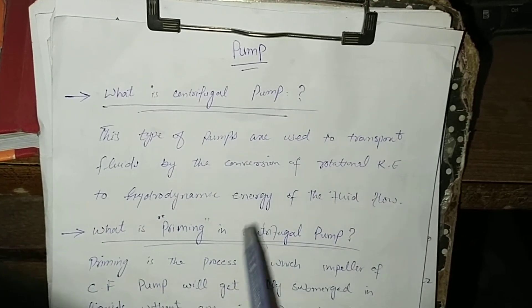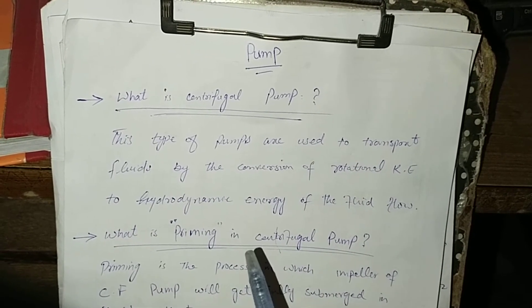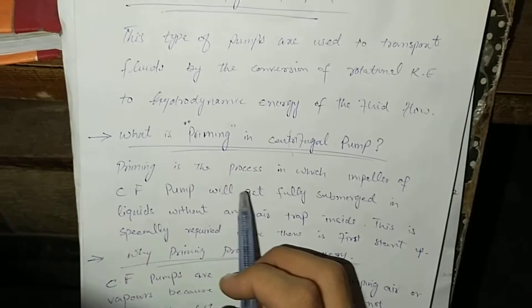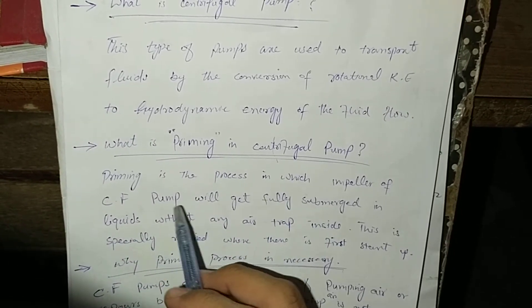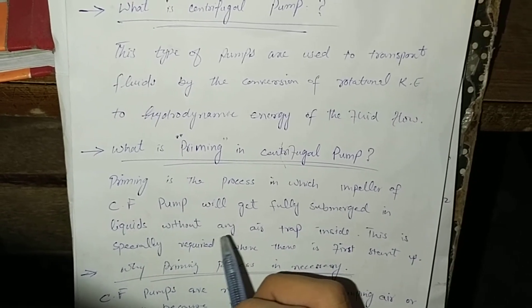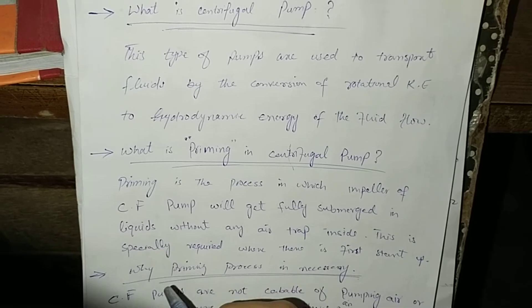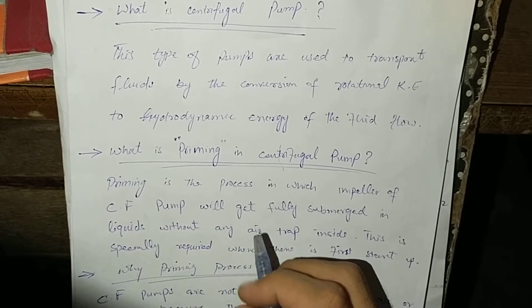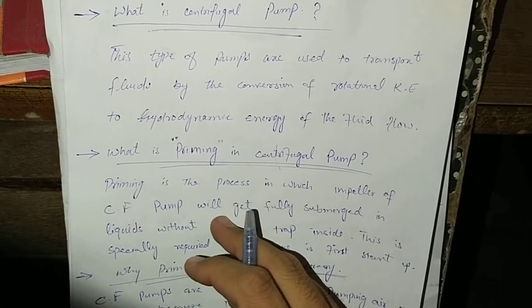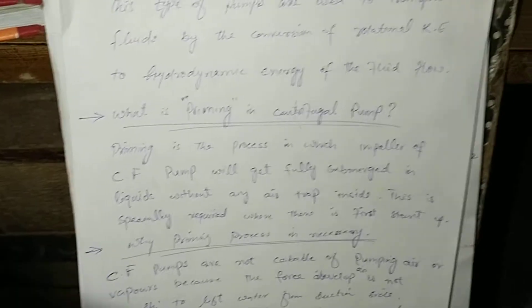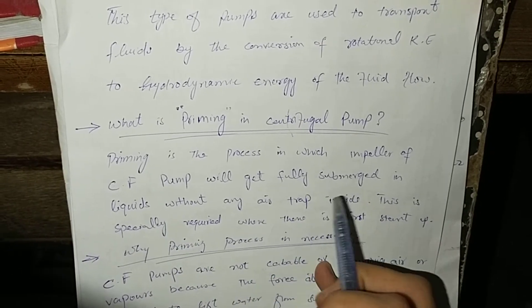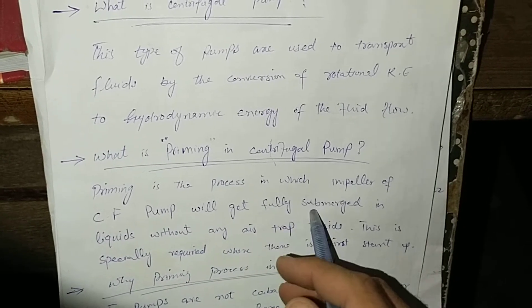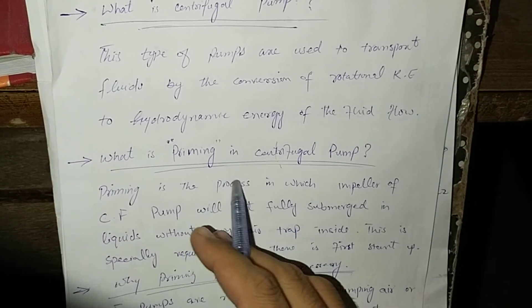The most important term used in the centrifugal pump is priming. Priming is a process in which the impeller of the centrifugal pump gets fully submerged in the liquid without any air trapped inside. This is specially required at first startup. The casing of the centrifugal pump, in which the impeller is built, is filled up with water — that process is called the priming process.